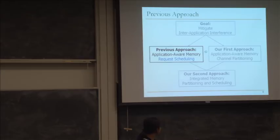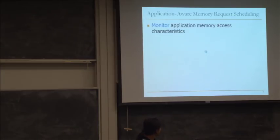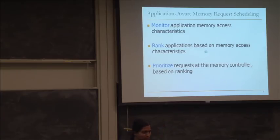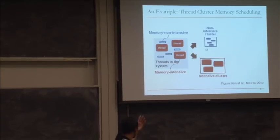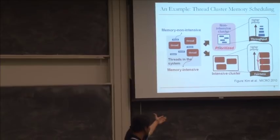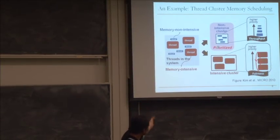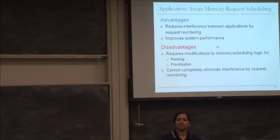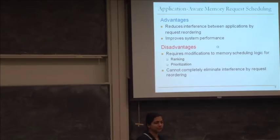The problem with FRFCFS is it's unfair — it's not aware of interference between applications, which is why previous work has looked at memory request scheduling. The basic idea behind request scheduling: you monitor applications' memory access characteristics, rank applications based on these characteristics, and enforce this ranking to prioritize requests at the memory controller. The advantage is it reduces interference and improves system performance, but the disadvantage is it requires modifications at the memory controller, and reordering can only reduce interference to a certain degree — it cannot really eliminate interference.